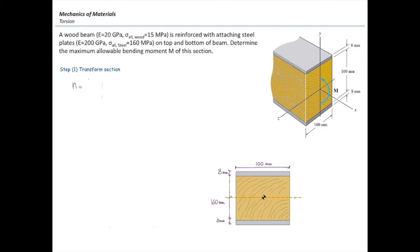To convert the material into another one, I need to use the n-factor. The n-factor is the ratio between the modulus of elasticity of the two materials. Which of these two materials goes to the top of the fraction and which one goes to the bottom? In this case, which material is stronger — wood or steel?